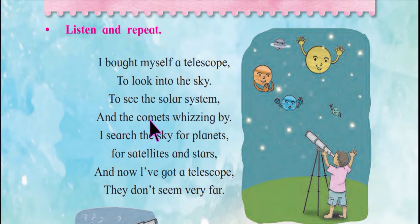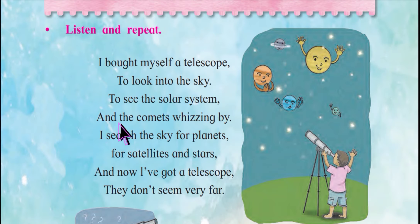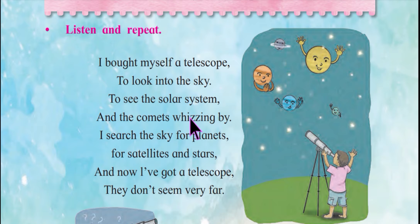And the comets whizzing by. What is a comet? A comet is an object in space that looks like a bright star with a tail, and it moves around the sun. In Hindi — jo suraj ke aas paas ghoomta hai, use comet bolte hain. 'Whizzing by' means to move very quickly — to pass by rapidly.